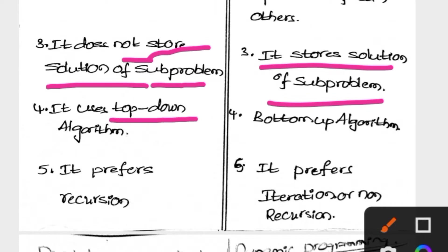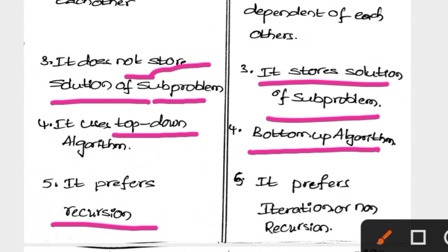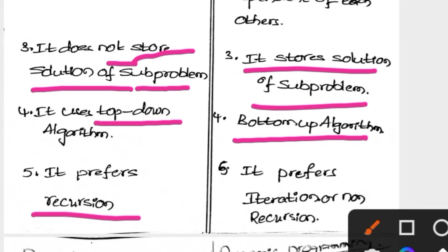In Divide and Conquer, it uses the top-down approach, and in Dynamic Programming it uses the bottom-up approach. Recursion means an algorithm calling itself. In Divide and Conquer we use the recursion method, whereas in Dynamic Programming we do not use recursion — we use iteration, meaning non-recursion, where we use repetitive loops instead of a function calling itself.